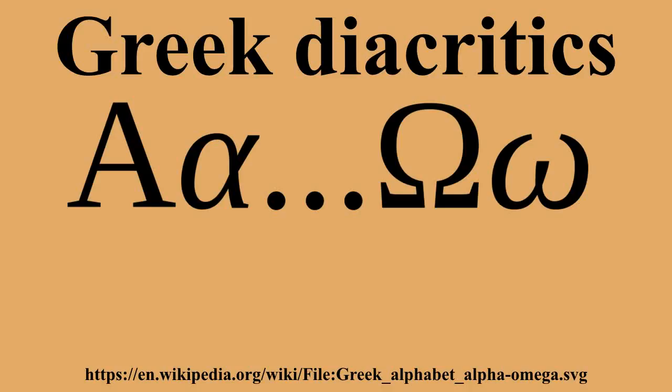From 403 BC on, the Athenians decided to employ a version of the Ionian alphabet. With the spread of Koine Greek, a continuation of the Attic dialect, the Ionic alphabet superseded the other alphabets, called epichoric, more or less quickly. The Ionian alphabet, however, was also made up only of capitals.